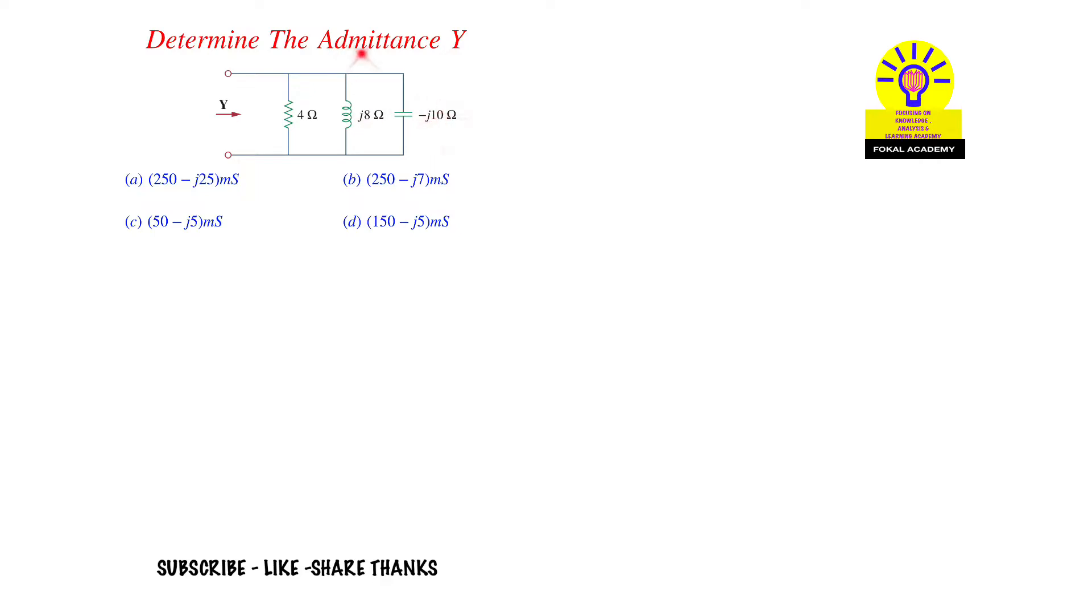To find the overall admittance for this circuit, we have impedance Z1 equal to 4 ohms, Z2, and Z3. To get the admittance for each component, we take the inverse of the impedance.